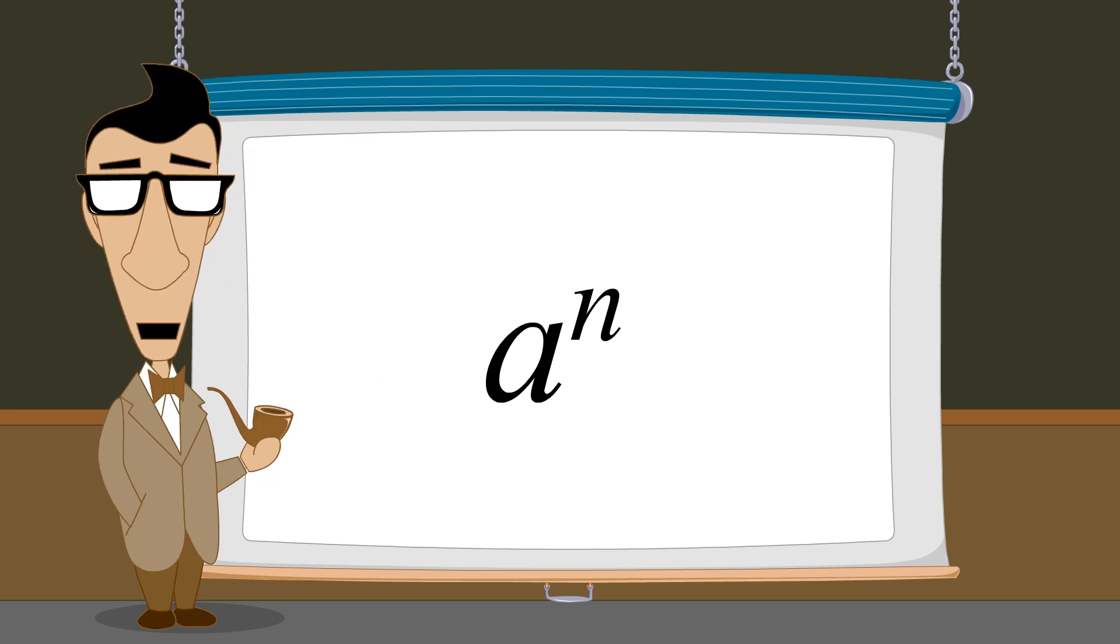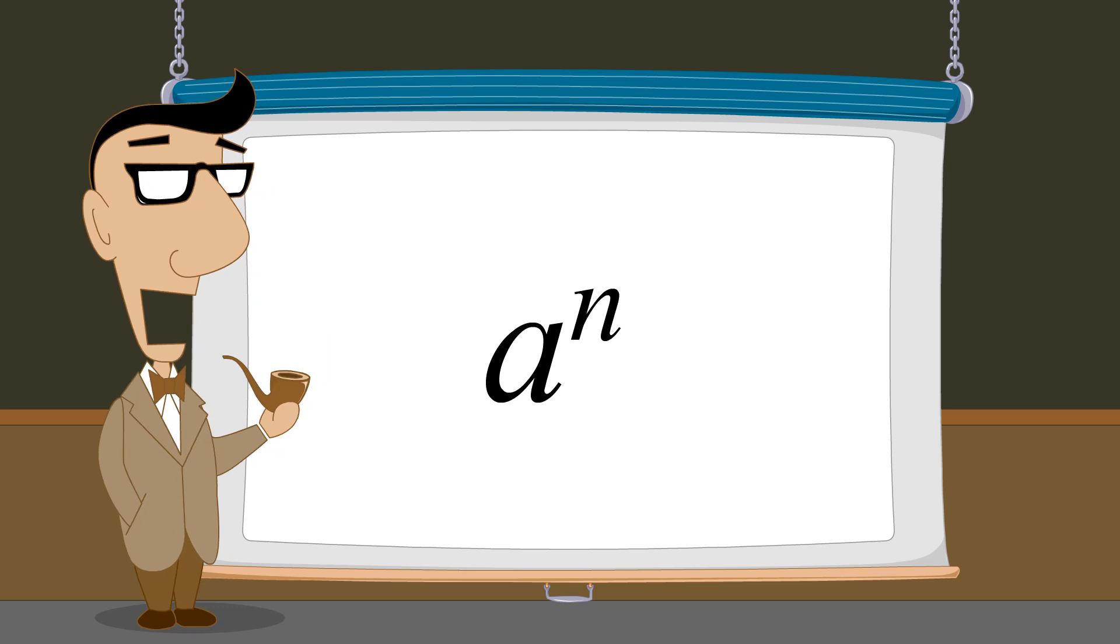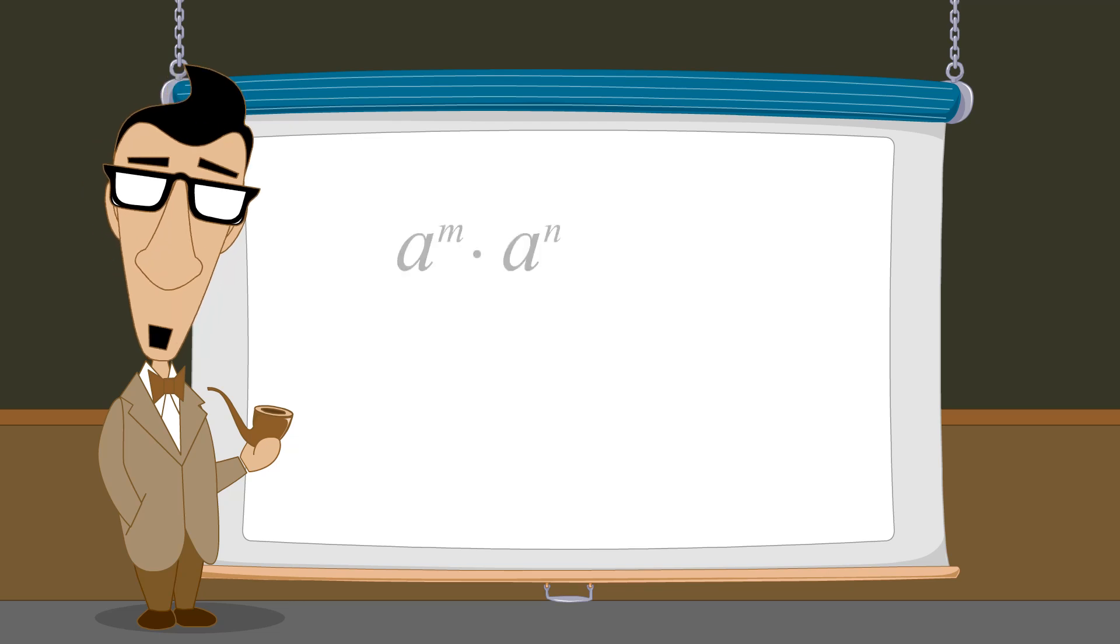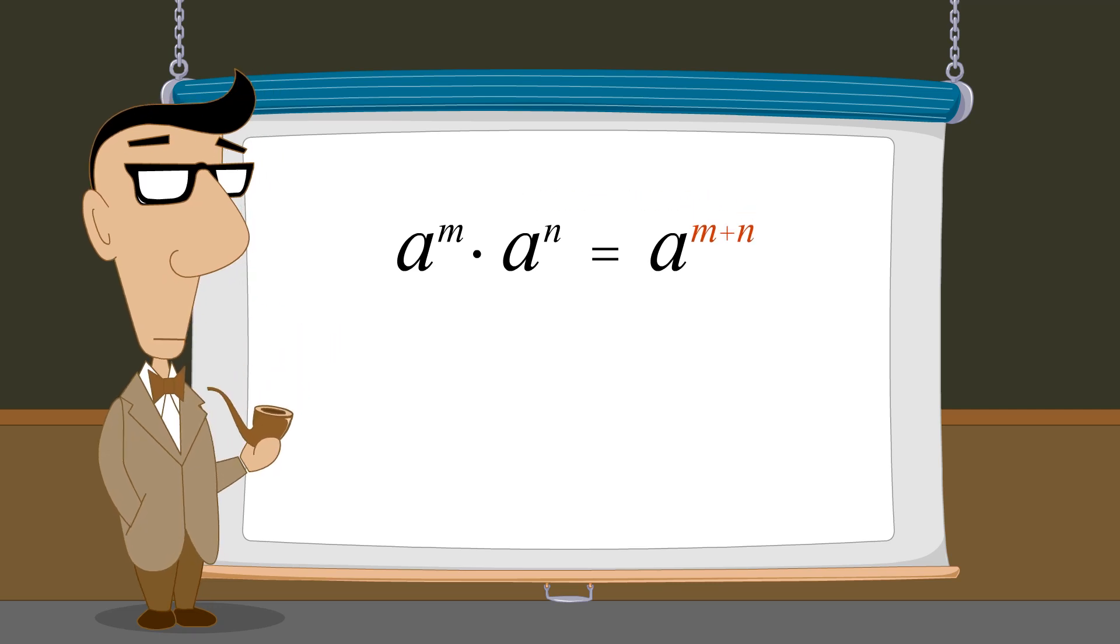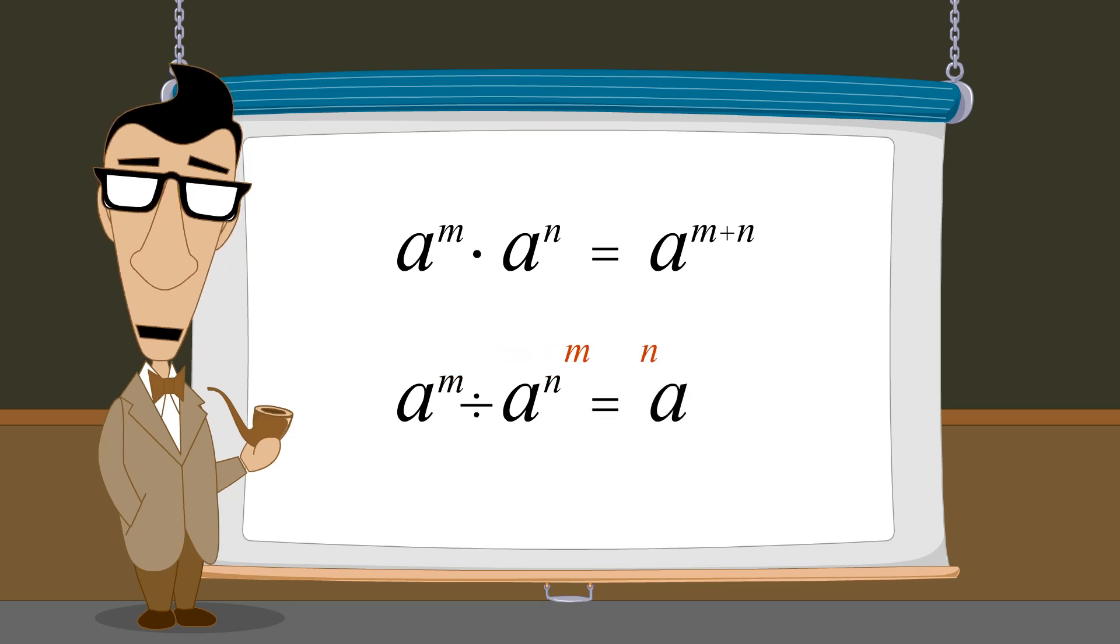In an exponential expression, n is called the exponent and a is called the base. We also saw that to multiply exponential expressions with the same base we add their exponents, and to divide exponential expressions with the same base we subtract their exponents.